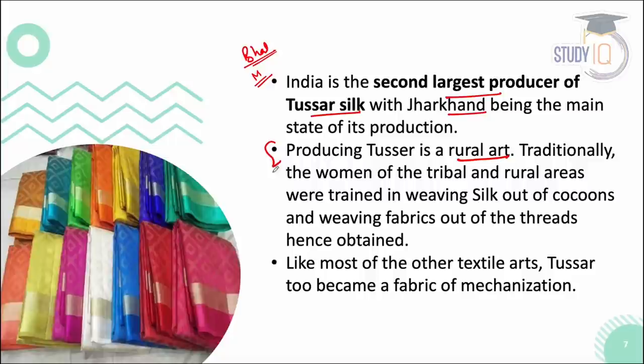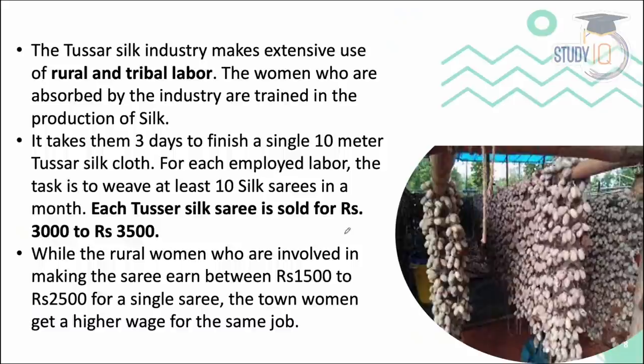Tassar silk production is a rural art, and people from villages are traditionally involved in it. Tribal communities trained in rural areas are skilled in silk production — spinning threads and working with fabrics. The silk industry has modernized and expanded, providing employment to rural and tribal labor. It takes almost 3 days to make a 10-meter silk cloth.